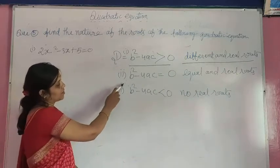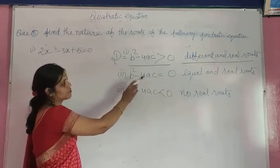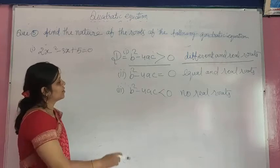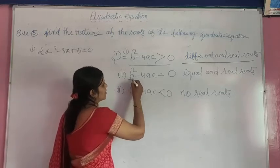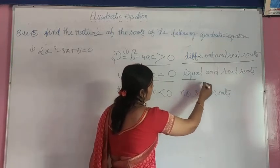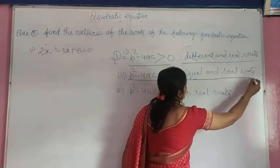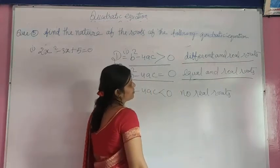And second condition is b² - 4ac is equal to 0. Agar D ki jo value hai, woh solve karne pe 0 aati hai, toh aapki hote hai equal and real roots. Jo roots honge equal bhi honge aur real roots honge.